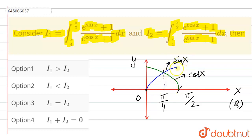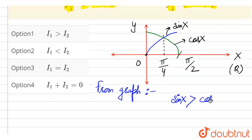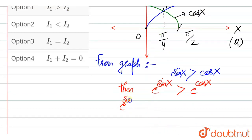We can see that both are positive values and the sin x value is greater than cos x. From the graph of functions sin x and cos x, we can say that the value of sin x is greater than cos x, and both are positive. Then we can simply say that e to the power sin x is also greater than e to the power cos x. Again, e to the power sin x + 1 is also greater than e to the power cos x + 1, just adding 1 on both sides.